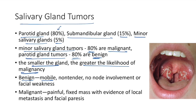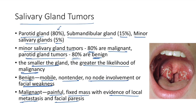Benign salivary gland tumors are mobile and non-tender with no lymph node involvement or facial weakness. Malignant salivary gland tumors are painful, present as a fixed mass with evidence of local metastasis and facial paresis.